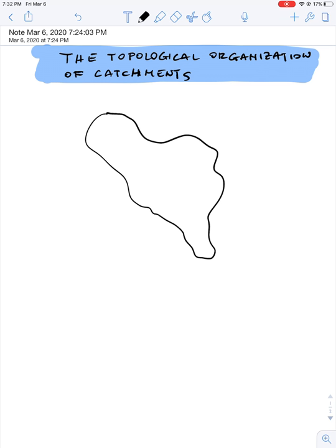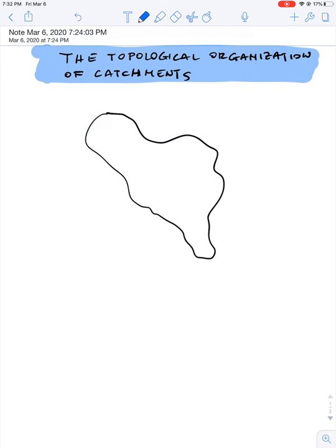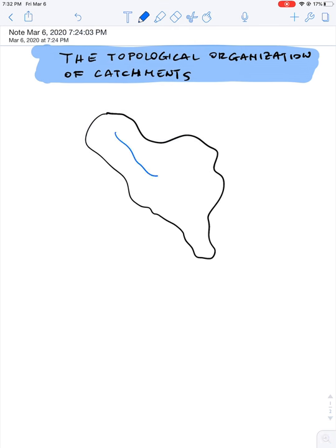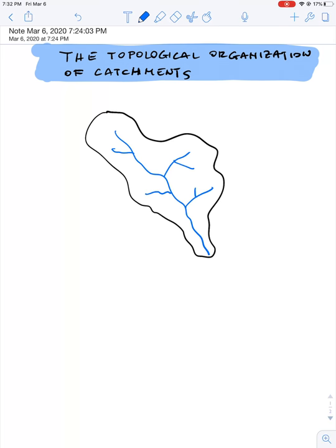Let's do like this and we add here the mainstream and some secondary streams here. Let's do it a little bit more complicated. The blue one is the streams and the other is the catchment area.